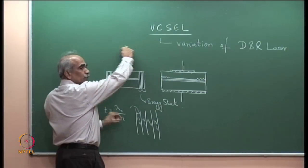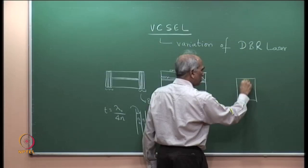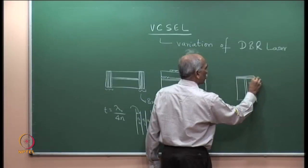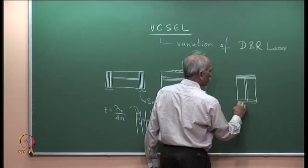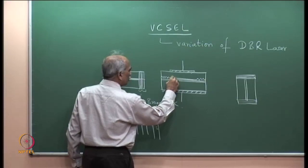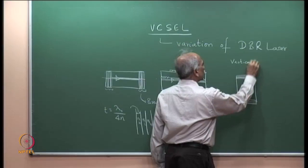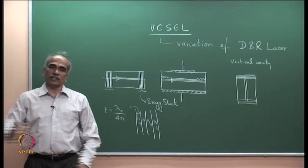Now, looking at the DBR structure — the origin of VCSEL: if I rotate this through 90 degrees, what we have is a structure where the cavity mode is going back and forth horizontally. The cavity is horizontal. If I rotate this, the cavity becomes vertical. This is the vertical cavity.